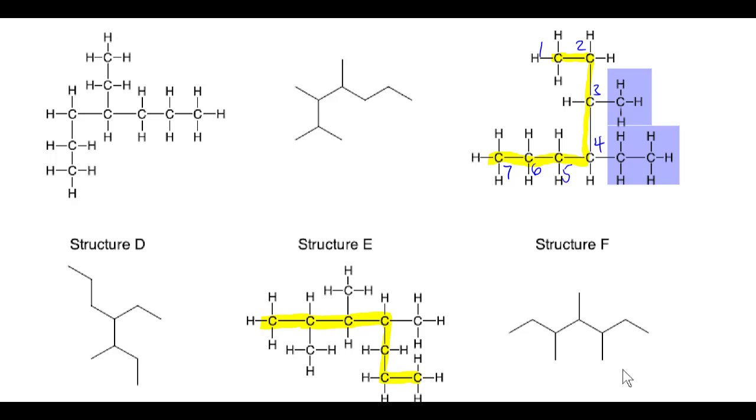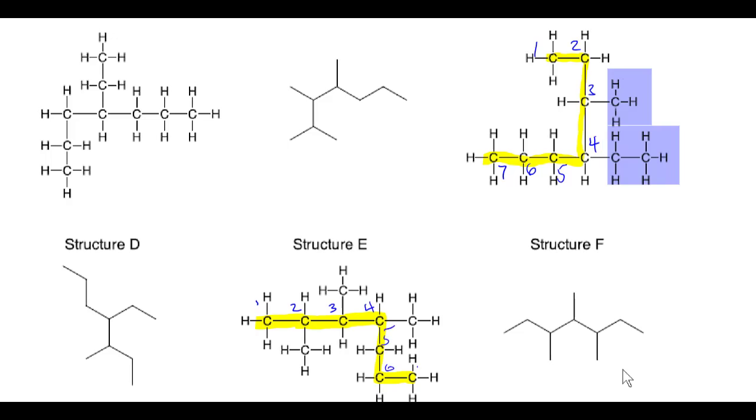Now, as far as numbering this, what we'll need to do is to start at the end closest to the first branch point. So this is going to be the left side because if we give the left carbon a number 1, then the first branch point occurs at the number 2 position. That would be a CH3 group. Then there's 3, and 4, and 5, and 6, and 7. This is a molecule that has a 7-carbon longest chain, and it has CH3 groups in the 2, 3, and 4 positions.